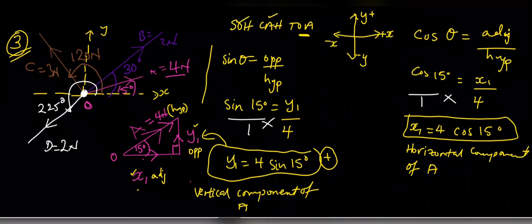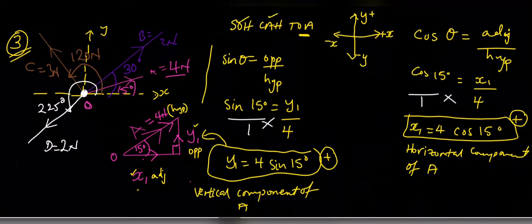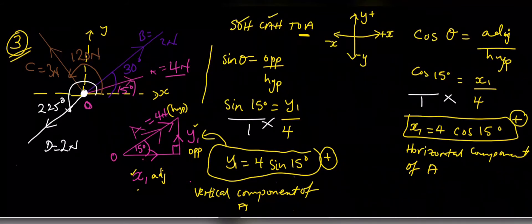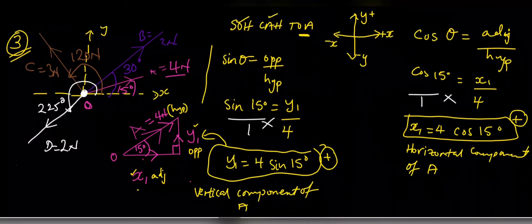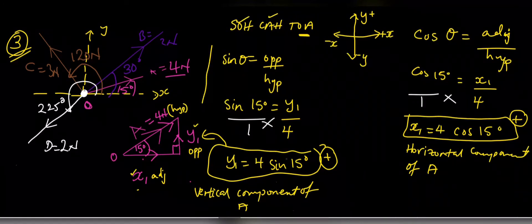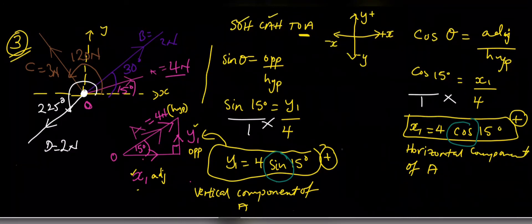A key pattern to note: if the vertical component uses sine, the horizontal component uses cosine, and vice versa. Always draw your triangle and identify the sides before calculating. Now we'll apply the same process to forces B, C, and D, then add all components together.